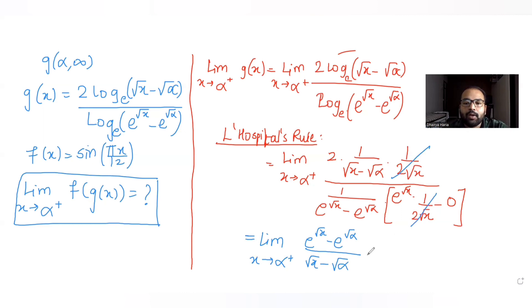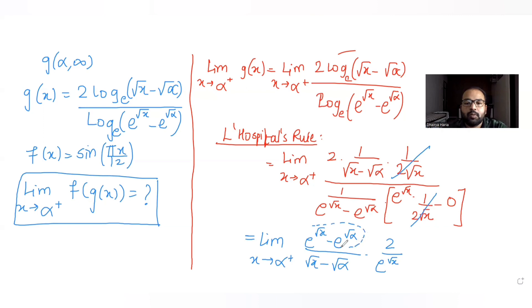There is also a factor of 2 over e^(√x) remaining. When we substitute x = α, the term (e^(√x) − e^(√α)) becomes zero and the term (√x − √α) also becomes zero, so we again get the indeterminate 0/0 form, and must apply L'Hôpital's rule a second time.